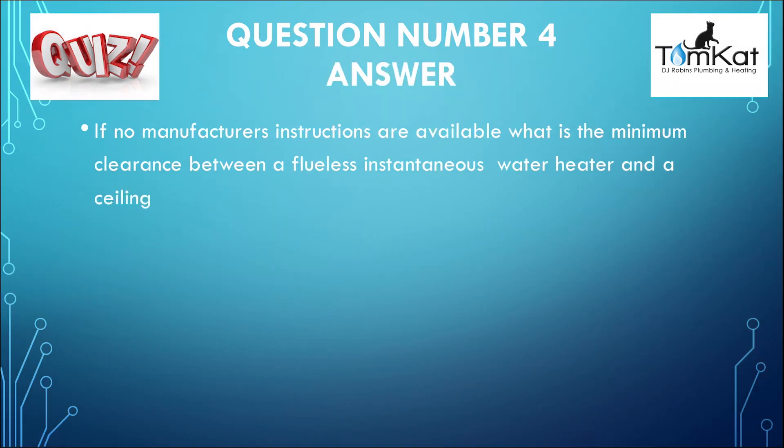Let's look at the answer for question number four: if no manufacturer's instructions are available, what is the minimum clearance between a flueless instantaneous water heater and a ceiling? The answer is C — 300 millimetres. That's the answer for question number four.